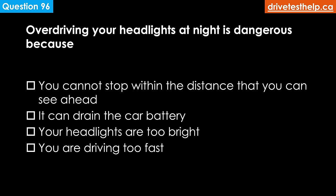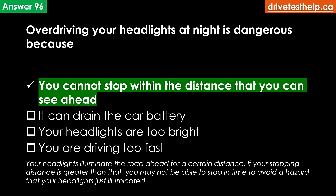Overdriving your headlights at night is dangerous because: you cannot stop within the distance that you can see ahead; it can drain the car battery; your headlights are too bright; you are driving too fast. The correct answer is you cannot stop within the distance that you can see ahead. Your headlights illuminate the road ahead for a certain distance — if your stopping distance is greater than that, you may not stop in time to avoid a hazard. For example, your low beam headlights have about a 45-meter range, but at 80 km/h your stopping distance is 60 meters — your headlights may pick up a hazard at 45 meters, but you won't be able to stop in time.